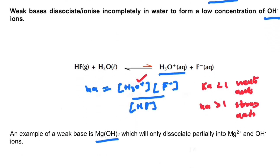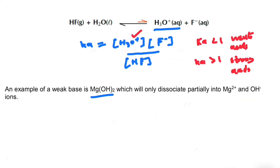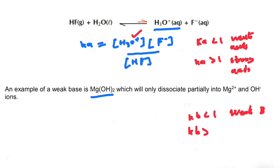We can derive almost the same for bases using the Kb value — the ionization or dissociation constant. The same logic applies: if Kb is less than one, we have a weak base, and if Kb is greater than one, we have a strong base. Whether it is greater than or less than one is decided by the concentration of OH⁻.